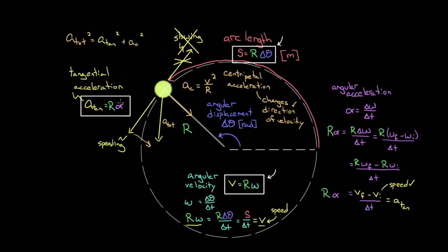To recap: there are two components of acceleration. The tangential acceleration, r times alpha, either speeds an object up or slows it down. The centripetal acceleration changes the direction of the object's motion. You relate the speed of an object to the angular velocity by v = rω. And you relate the arc length — the distance traveled around the circle — to the angular displacement by S = rΔθ. These three equations are how you relate the angular motion variables to their linear counterparts.